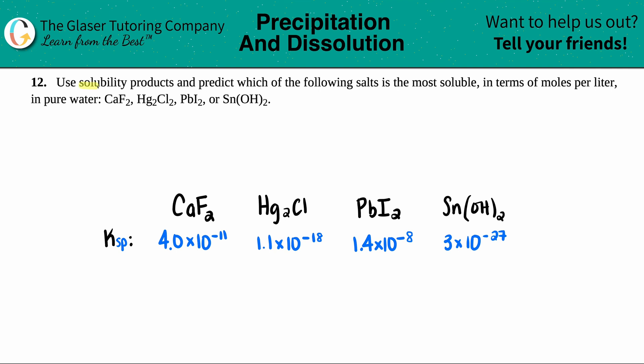Number 12, use solubility products and predict which of the following salts is the most soluble in terms of moles per liter in pure water. And then they give us these four ionic compounds. So we're dealing with CaF2, Hg2Cl2, PbI2, and Sn(OH)2.